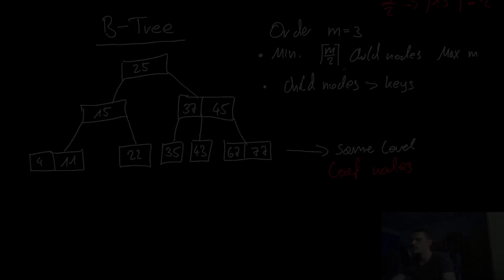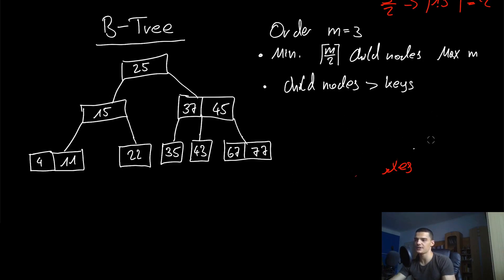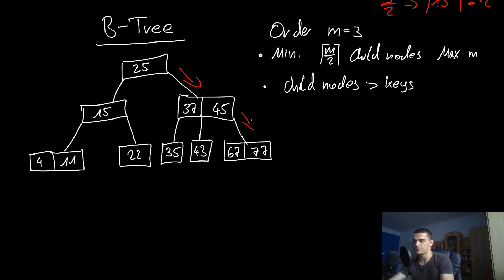Let's try inserting a new element to see what happens. We're going to add the element 80 to the B-tree. Starting at the root node — it's 25, so we go right. Then we have 37 and 45: 80 is larger than 37, not between 37 and 45, and larger than 45, so we go right. We have keys 67 and 77 at the leaf level, and since we're at the leaf, we append 80 there.